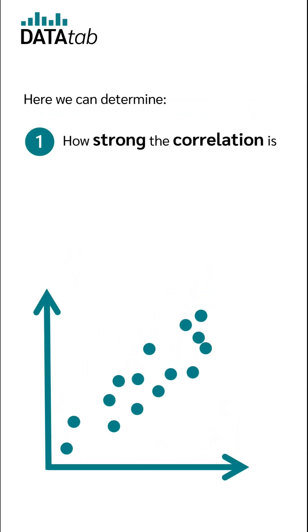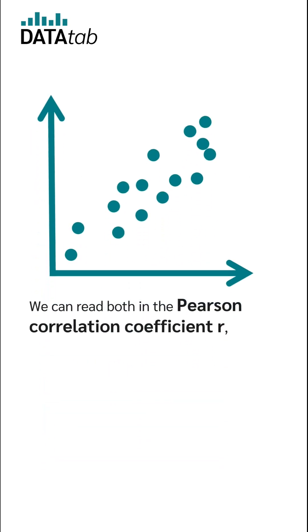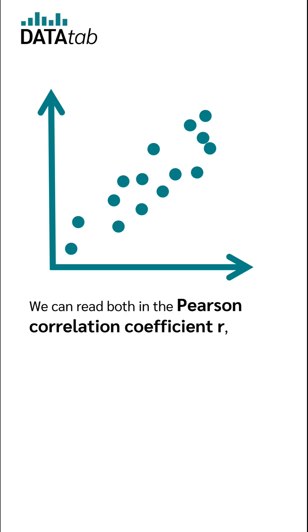Here we can determine how strong the correlation is and in which direction the correlation goes. We can read both in the Pearson correlation coefficient r, which is between minus 1 and 1.